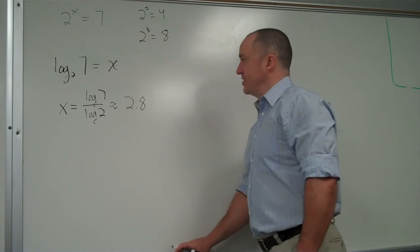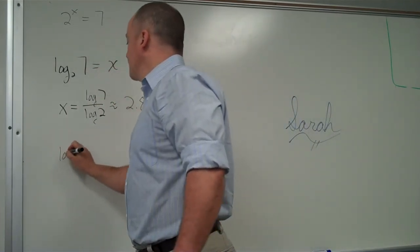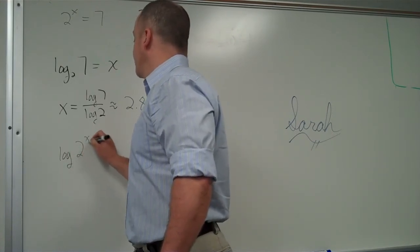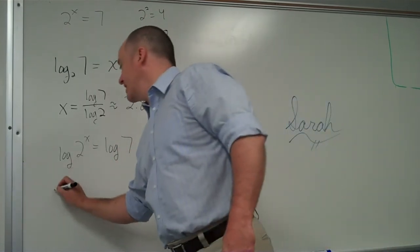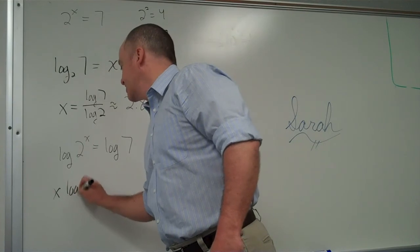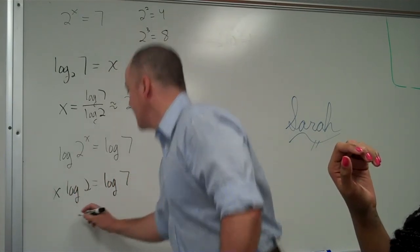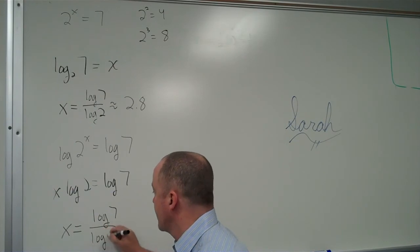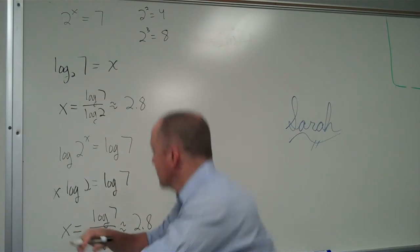The other way I could have done this from here is I could have said that log base 10 of 2 to the x equals log base 10 of 7. Then I could whoosh down the exponent and get x times log base 10 of 2 equals log base 10 of 7. And then divide both sides by log base 10 of 2. It's harder to say than to do. And I get the exact same thing as I did with the change of base rule.